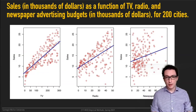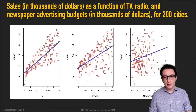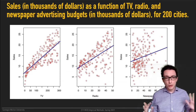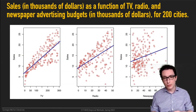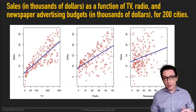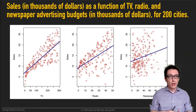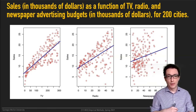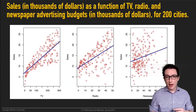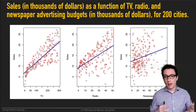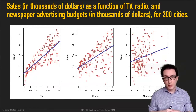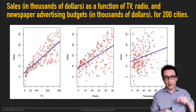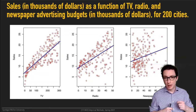Let's move on to our main topic for today and look at an example I'll be using as a running example throughout. This is an introduction to linear regression. Here we have a dataset of sales — in thousands of dollars — as a function of the amount of advertising done on TV, radio, and through newspapers, also in thousands of dollars, for some 200 cities. Every little point there is one of these cities in which the data was collected.